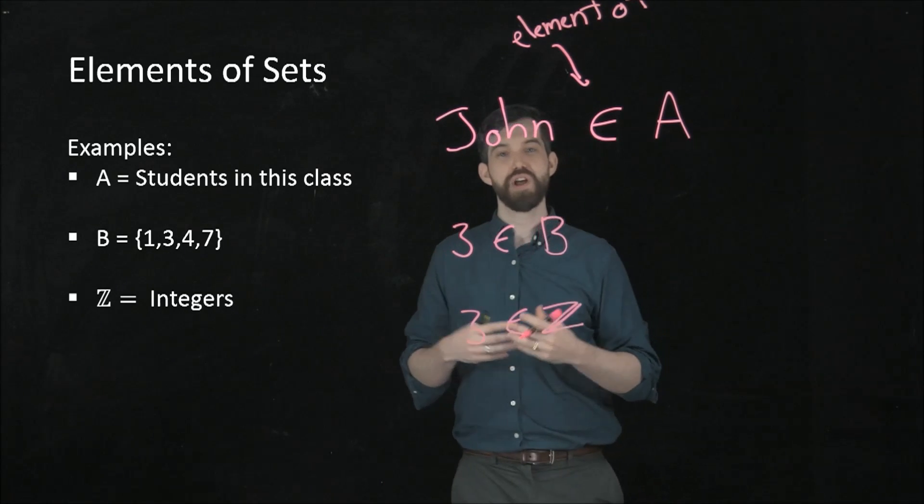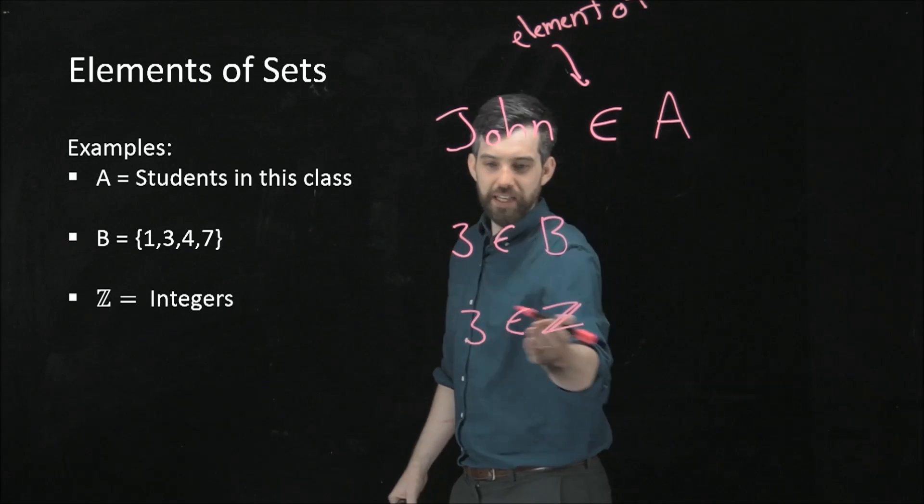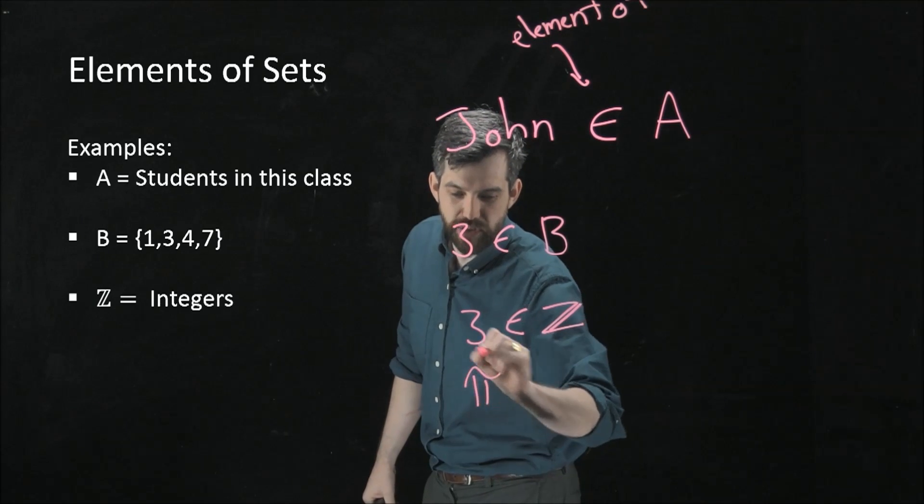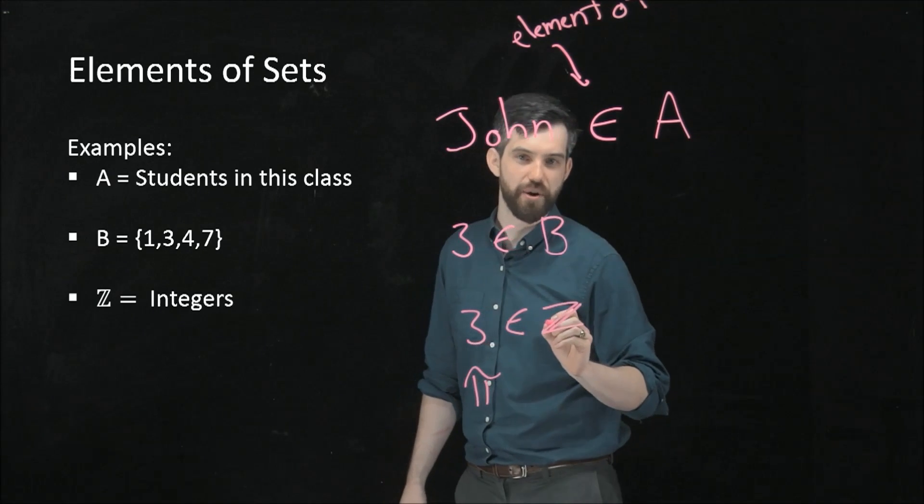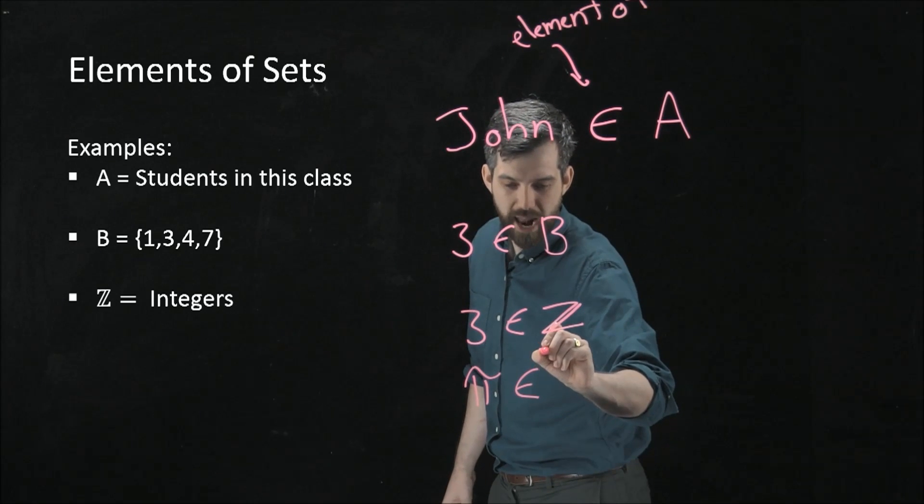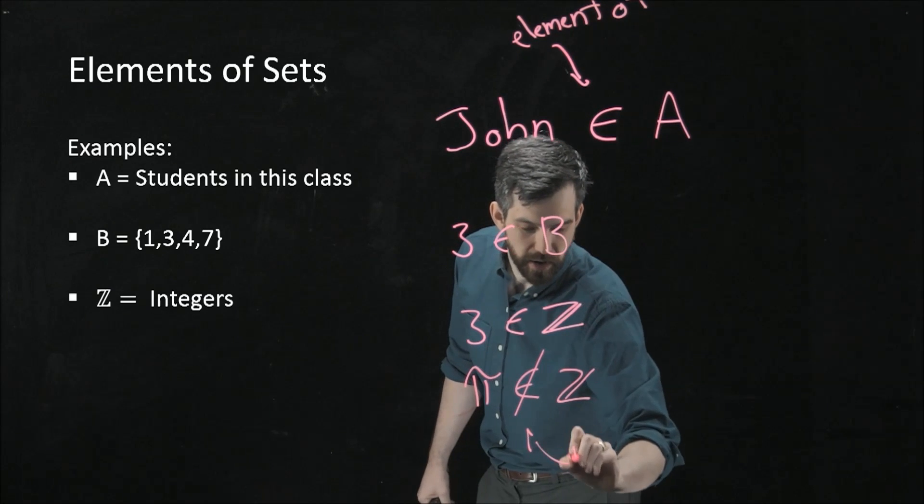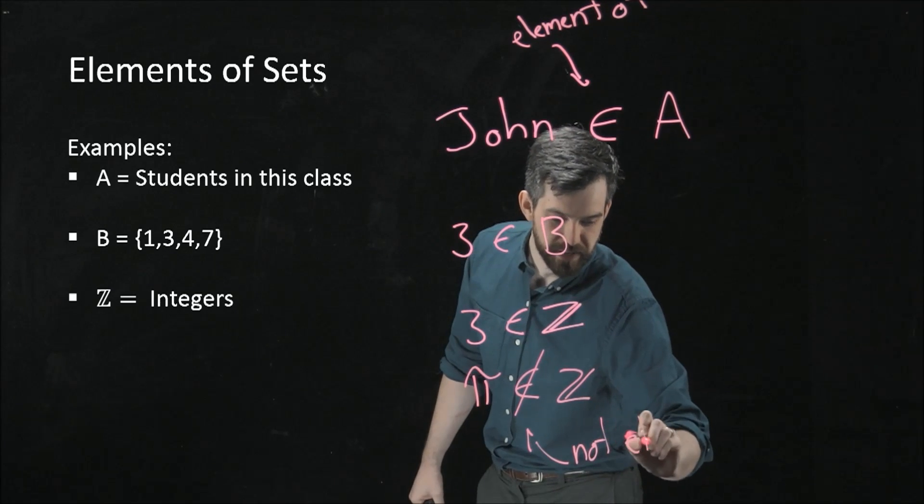What about how to denote an element that is not going to be in a set? For example, 3 is an integer, but pi is not an integer. And here's how I denote this. Pi, I put the element symbol and I put a line through it. It is not in Z. So this means not an element of.